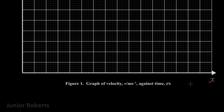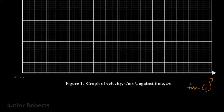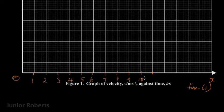I can label my x-axis here — time in seconds. I need to go from 0 to 11, so I'm going to choose a scale on my x-axis of one centimeter to one second. Each centimeter is equal to one second, so I'll go ahead and fill in the values — one second increments up to 12.